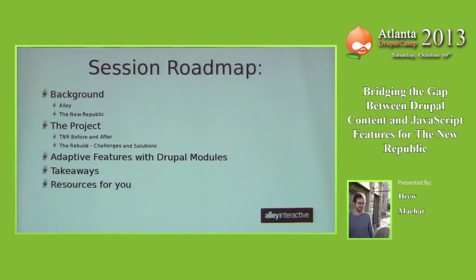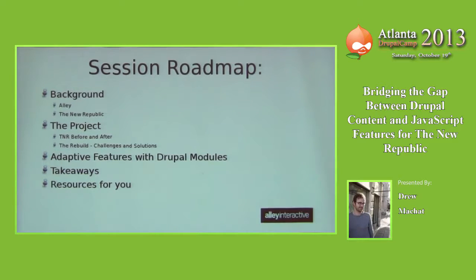Specifically, we'll look at a module I wrote that deals with treating Drupal content in an adaptive way — passing the Drupal content from the backend to your JavaScript and reacting to it on the page. We'll end with some notes on what we learned, and there will also be a GitHub repository with the module so you can dig into the code and explore in more depth at your leisure afterwards.